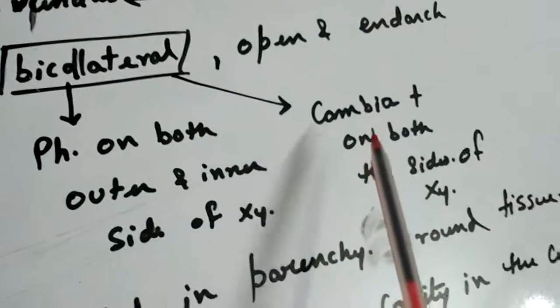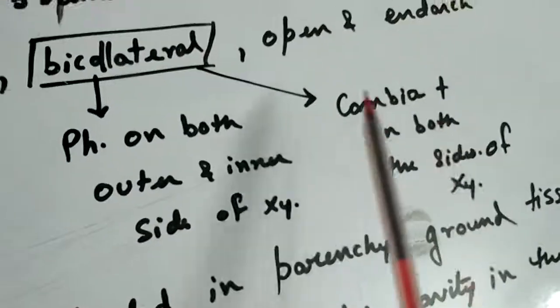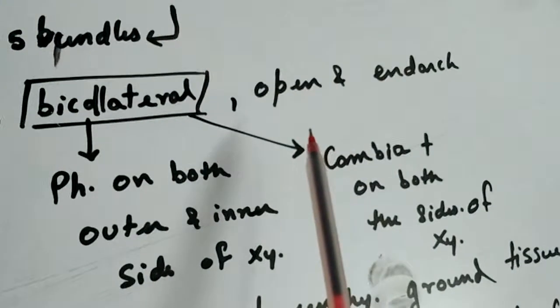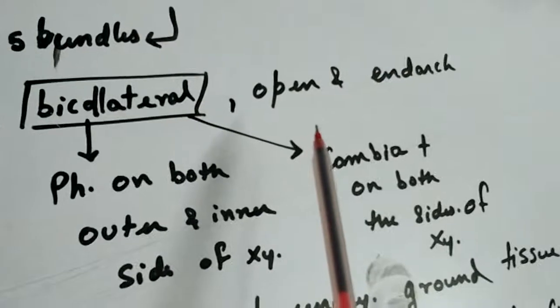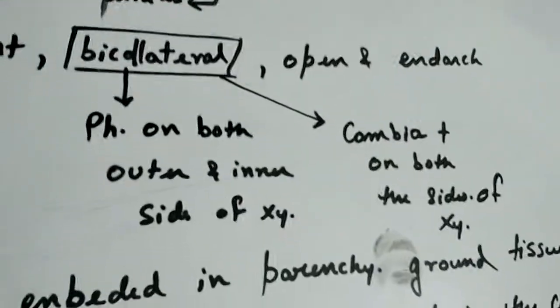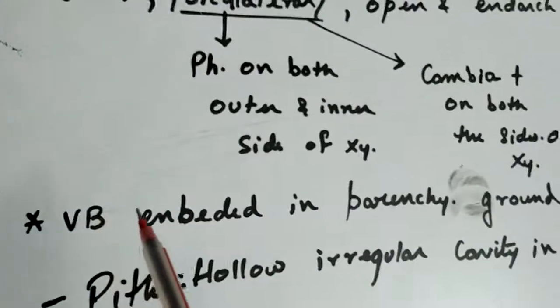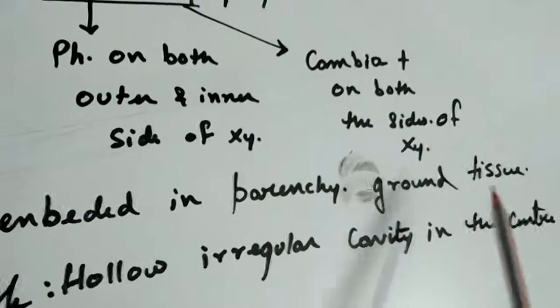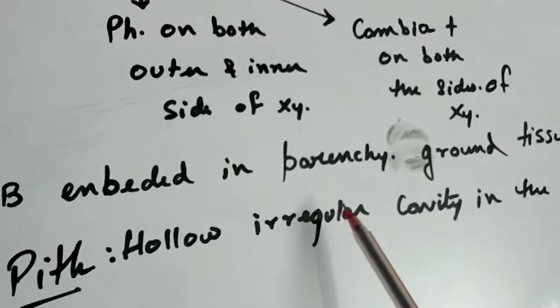There is presence of cambia on both the sides of xylem also. Cucurbita stem has an open and endarch vascular bundle, but bi-collateral is very very important. Vascular bundles are embedded in parenchymatous ground tissue. Pith is hollow - irregular cavity present in the center.